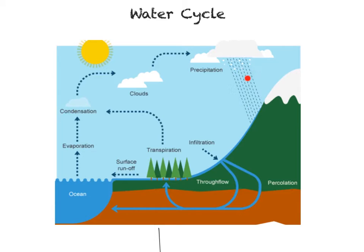Before that precipitation makes its way to the surface it could be intercepted or caught by vegetation. This process of interception occurs when vegetation, for example trees and leaves, catch the precipitation. The precipitation is then either held in the vegetation or makes its way back to the surface, and then surface runoff carries it back to the river or the sea.